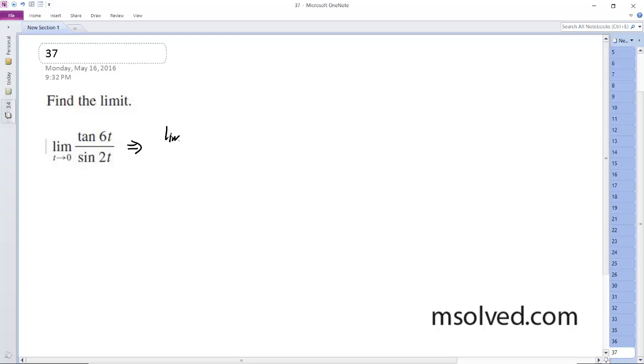So limit as t approaches 0 of sine of 6t over t times 1 over cosine of 6t times t over the sine of 2t.